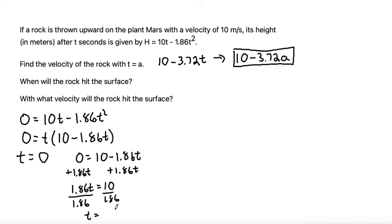Which makes 1.86t is equal to 10. And then divide both sides by 1.86 to make t is equal to 10 divided by 1.86, which is about 5.4 seconds. It's going to take the rock 5.4 seconds to go up and then come back down and hit the planet Mars.